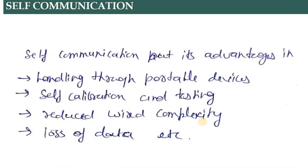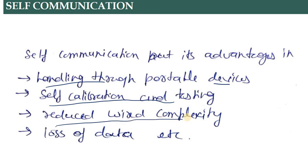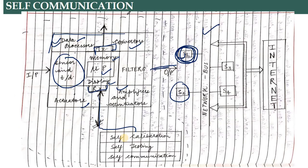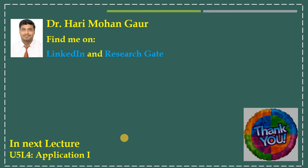Self communication होने से फायदे क्या होते हैं: handling through portable devices आसान हो जाता है, self calibration and testing आसान हो जाती है, reduce wire compatibility complexity — बहुत सारे wires आपस में connect नहीं करने होते, protocol को change करने की जरूरत नहीं है। Loss of data — suppose हमारा sensor खराब हो गया but server पे वो data stored है। तो ये कुछ advantages हैं self communication होने के। So this is all about self testing and self communication. In the previous lecture there was self calibration, so we have done with the characteristics of smart sensors. We will move in the next lecture for its applications — application part 1 and application part 2 — two lectures left for the completion of this unit.